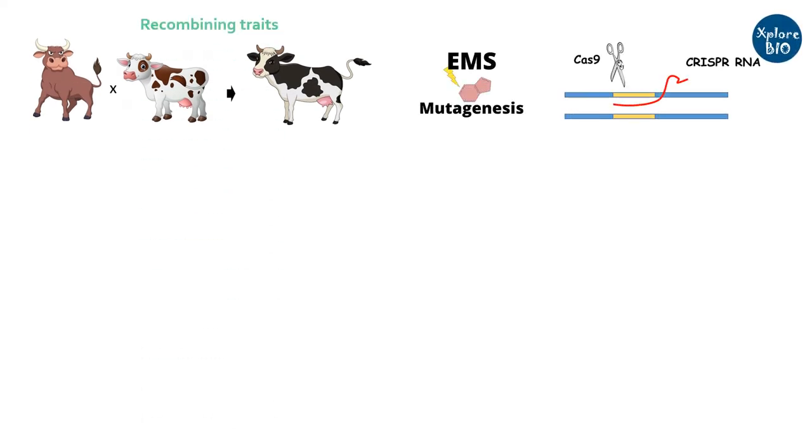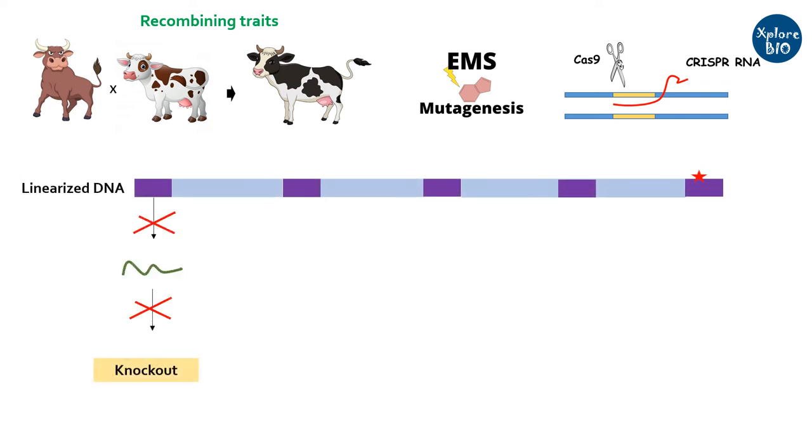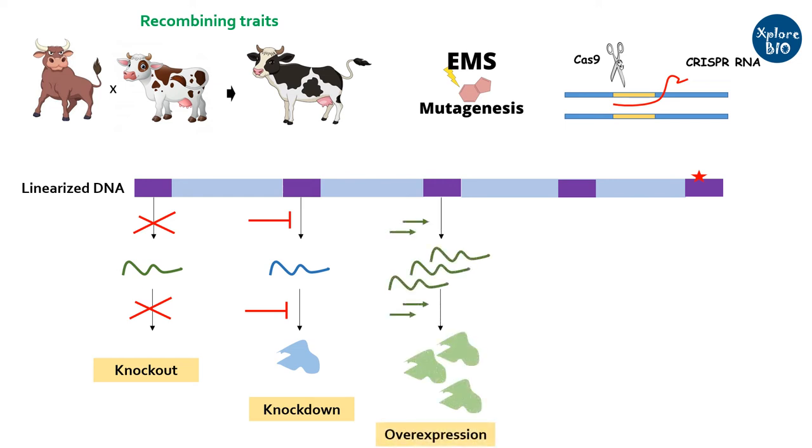Using breeding, mutagenesis, genetic engineering, and other approaches, you can recombine traits, knockout or stop a gene from expressing, or you can suppress expression of a gene or overexpress to get higher copies of a protein. You can also make an organism express a newer protein which was not there earlier. You can engineer a protein with better properties and function.